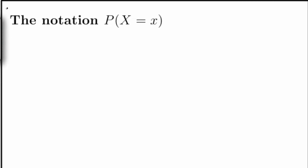In this lecture we'll take a look at the notation P, capital X, equal to lowercase x, inside parenthesis. Here P stands for probability, capital X is a random variable, and lowercase x is a real variable. Remember that we can think of a random variable as a variable that randomly takes one value out of a given set of possible values.